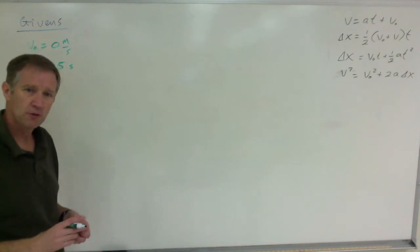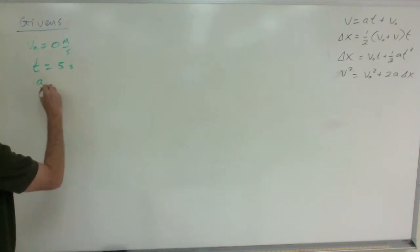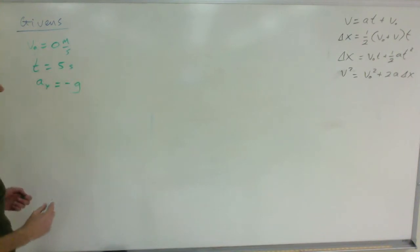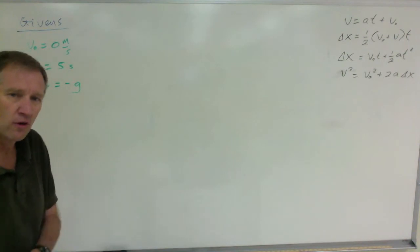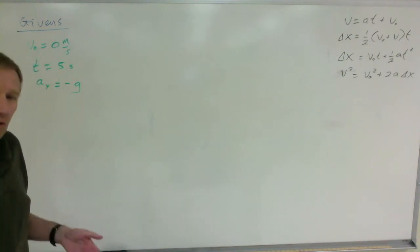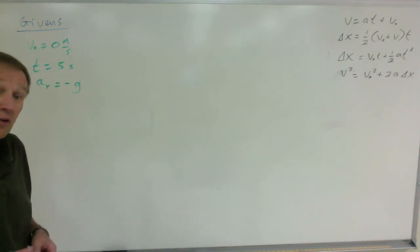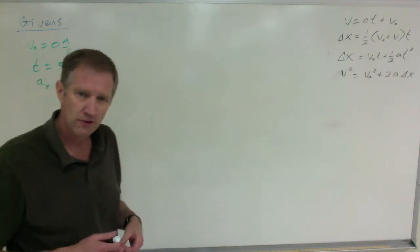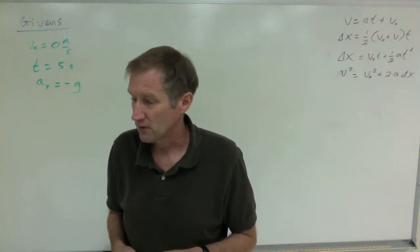The acceleration is negative g. Remember that g has no sign. g is the acceleration due to gravity. 1g is equal to 9.8 meters per second squared near the surface of the earth. It's different at different elevations.